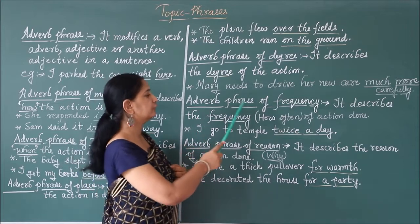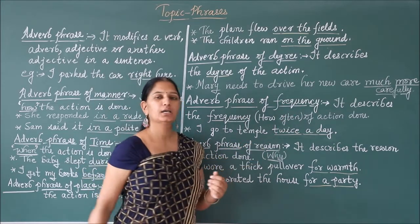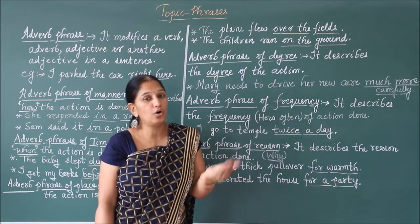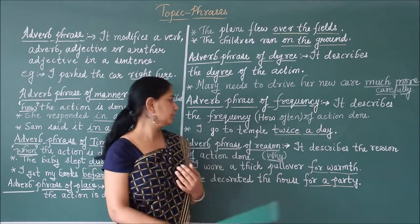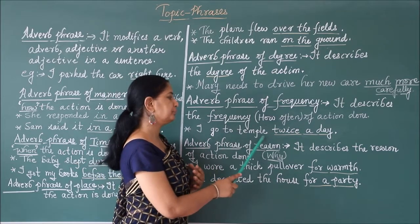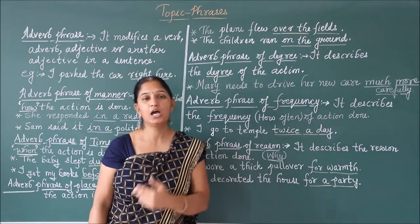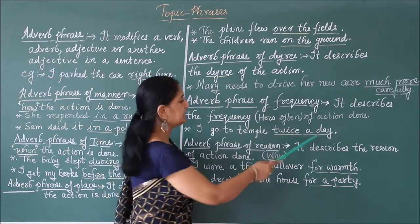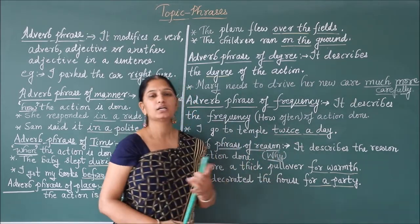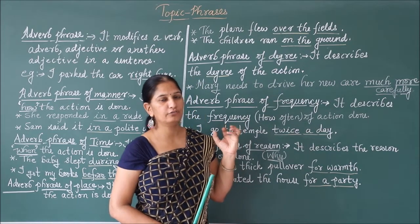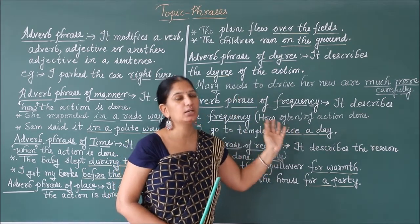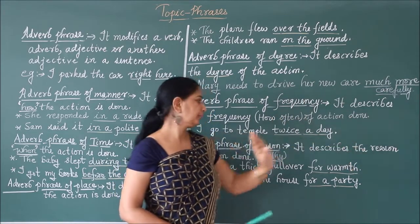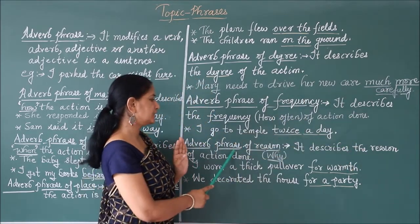Next is adverb phrase of frequency — it describes the frequency of the action, meaning how often the action is happening. For example: 'I go to temple twice a day.' How often do I go to temple? Twice a day. So 'twice a day' answers the question of how often, which is related with frequency. Hence it becomes an adverb phrase of frequency.